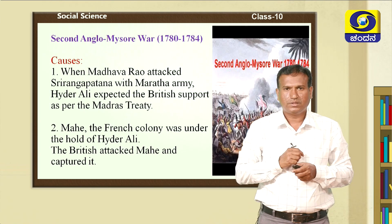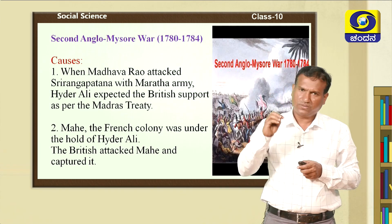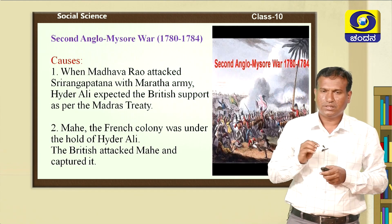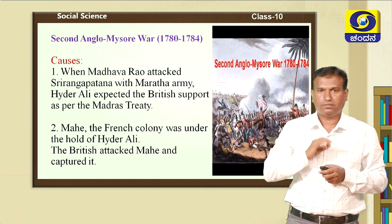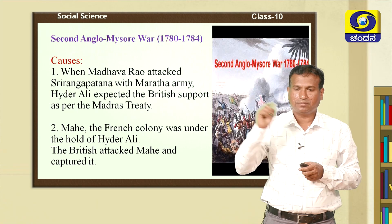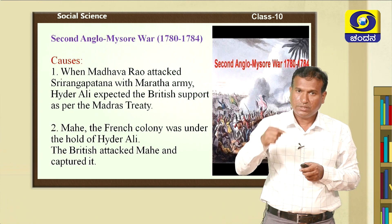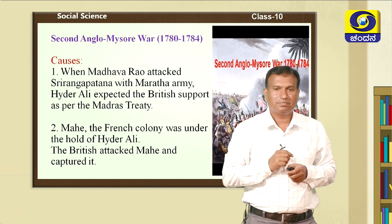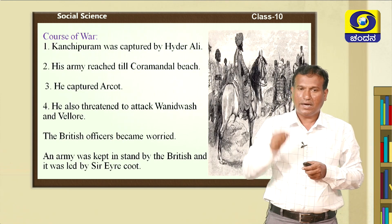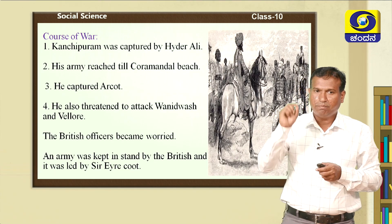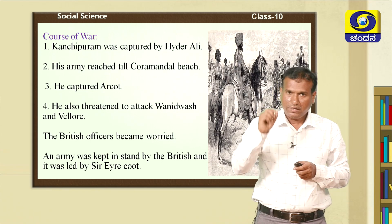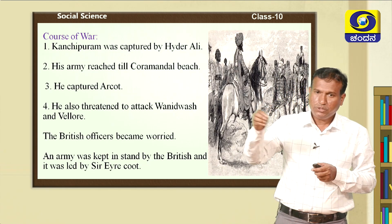Second reason: Mahe was a French colony but was under the control of Haidrali. The English attacked and captured Mahe, which enraged Haidrali. So Haidrali immediately made an attack and captured Kanchipuram. After capturing Kanchipuram, he moved towards the coastal area, attacking the Coromandel beach region and then marching towards Arkad.